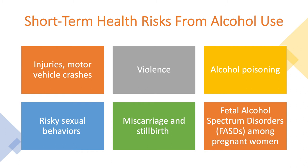Excessive alcohol use has immediate effects that increase the risk of many harmful health conditions, most often resulting from binge or heavy drinking. These include injuries such as motor vehicle crashes, falls, drownings, and burns; violence including homicide, suicide, sexual assault, and intimate partner violence; alcohol poisoning, a medical emergency from high blood alcohol levels; risky sexual behaviors including unprotected sex or sex with multiple partners, which can result in unintended pregnancy, sexually transmitted diseases including HIV, miscarriage, and stillbirth among pregnant women, or fetal alcohol spectrum disorders for the children they bear.